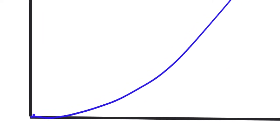What I want you to notice first is that the slope is changing. At the very beginning, there is virtually no slope — position is staying the same — so we'd say there's zero velocity. But as we move along, the slope starts to increase. At this location, let's say the slope happens to be one meter per second.